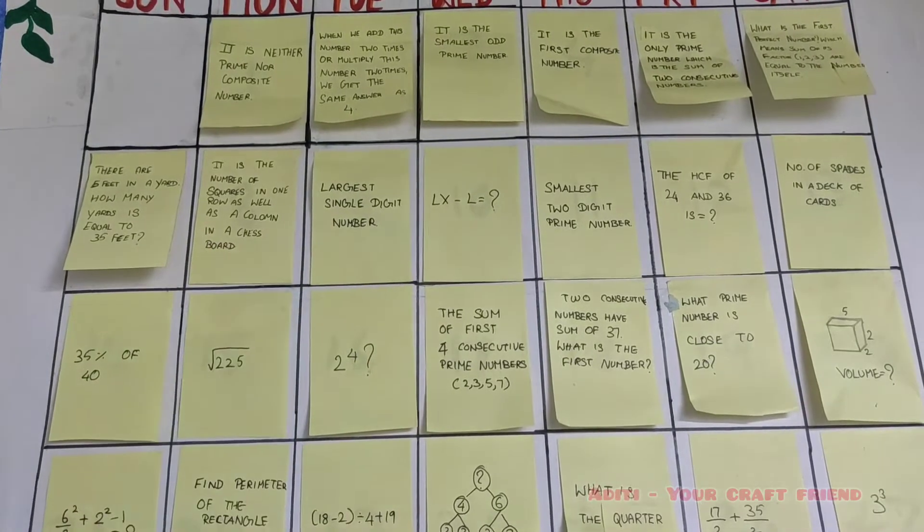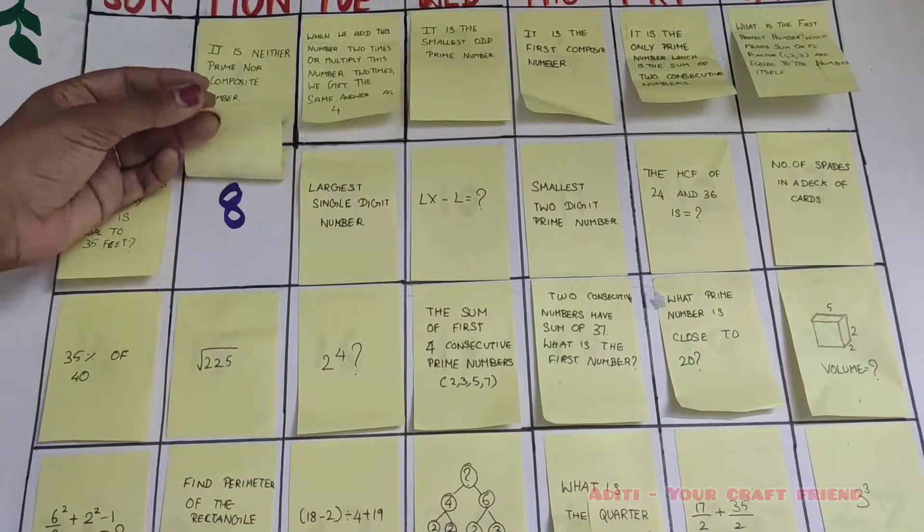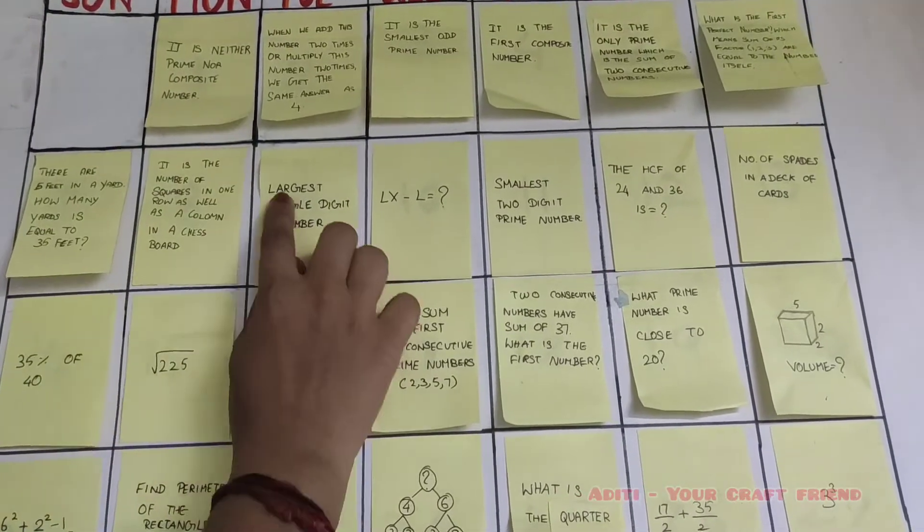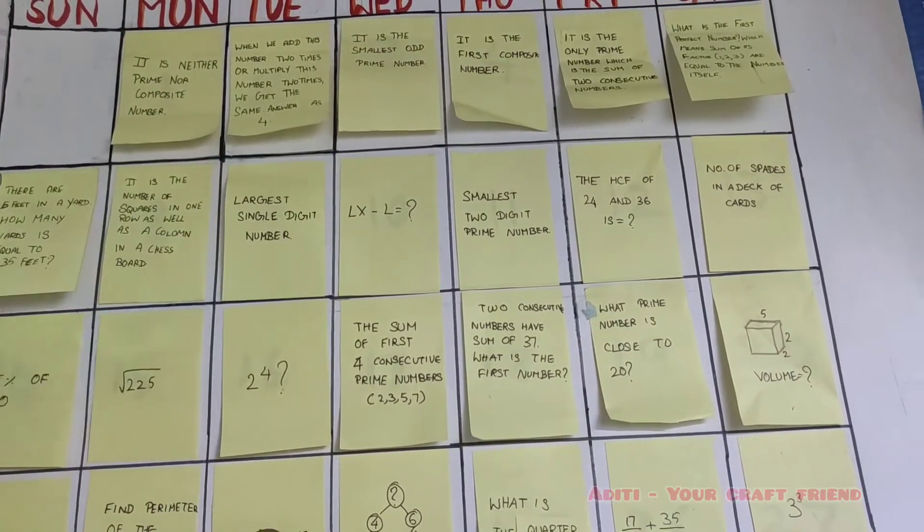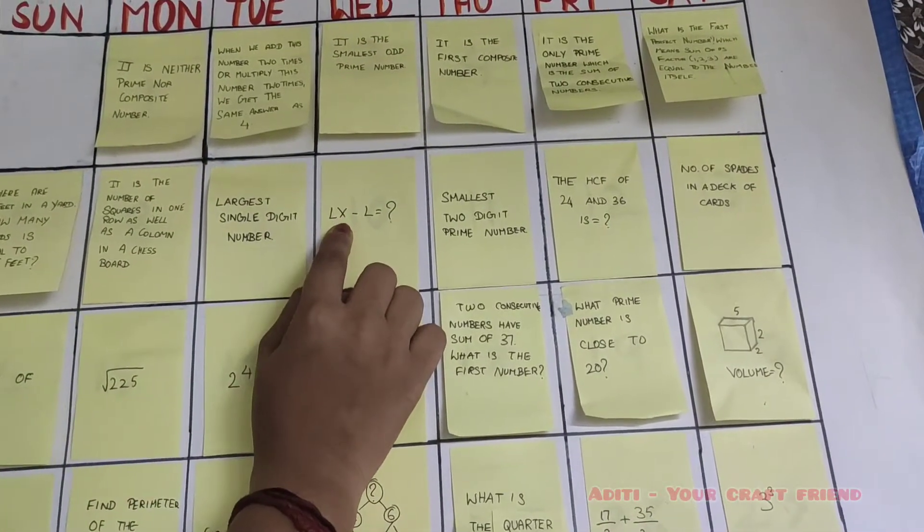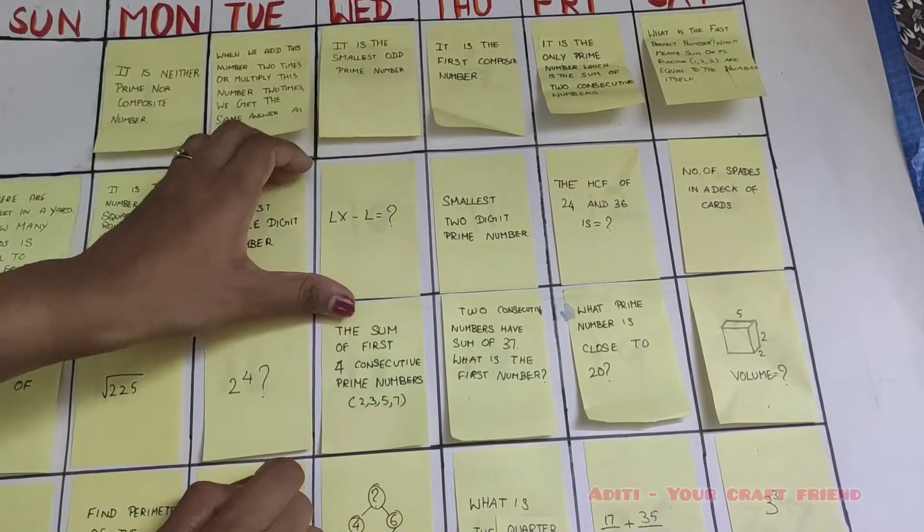The largest single digit number: 9. LX, that is 60, minus L, that is 50. What is the answer? Yeah, it's 10.